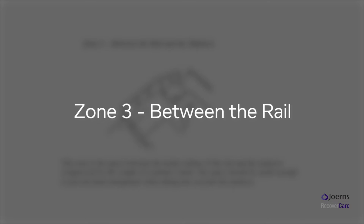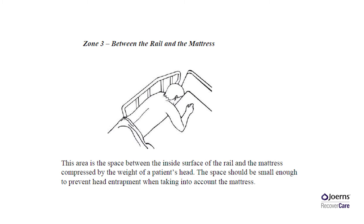Zone 3 – Between the rail and the mattress. This area is the space between the inside surface of the rail and the mattress compressed by the weight of a patient's head. The space should be small enough to prevent head entrapment when taking into account the mattress. Normally this issue is caused by the design of how the rail attaches to the bed frame, or due to the mattress being worn and therefore not offering the support needed.